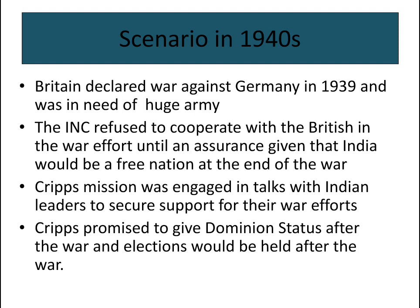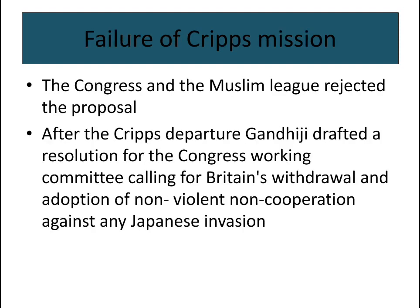The Cripps Mission was engaged in talks with Indian leaders to secure support for the British war effort. Cripps promised to give India dominion status after the war, and elections would be held after the war. However, the Cripps Mission failed because the Congress and the Muslim League rejected its proposal.